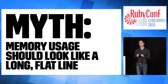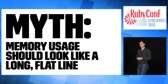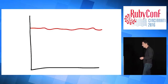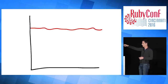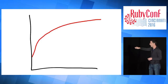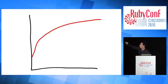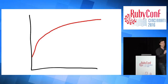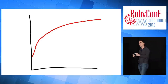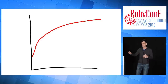The myth is that memory usage should look like a long flat line — memory usage should never grow in the steady state. The reality is that Ruby memory curves look like logarithms. In the first two hours or so after your application starts, code is getting required. Not everything gets required at boot — Rails tries to do that, but maybe your libraries don't. So code loading is going to increase memory usage.